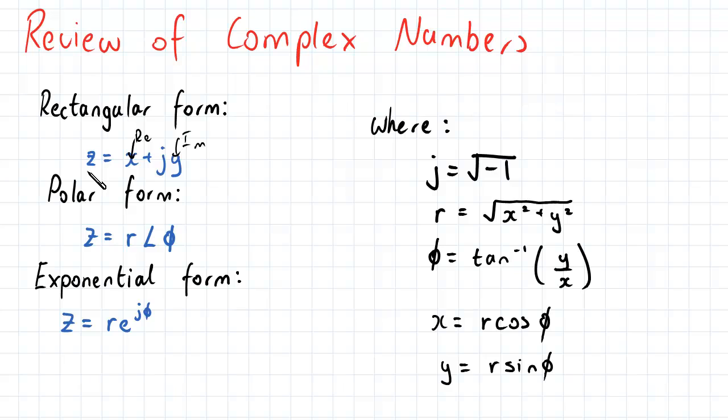It can also be expressed in polar form, so z equals r angle phi, or in exponential form, which is z equals r e to the power of j phi.